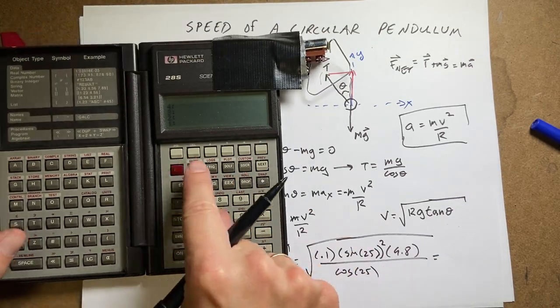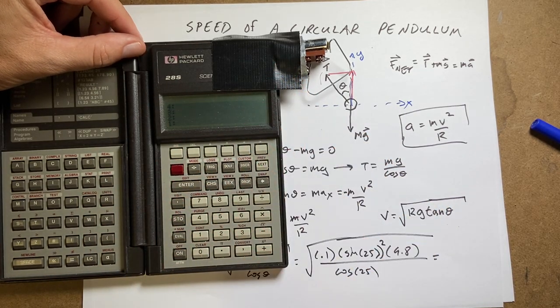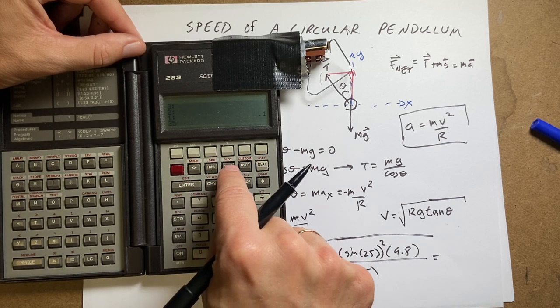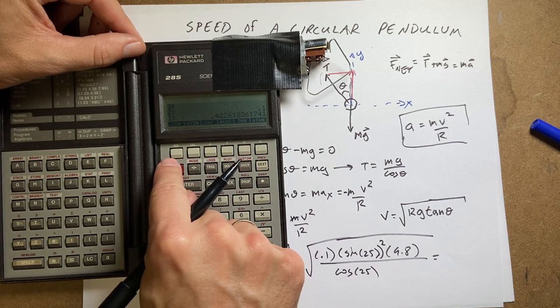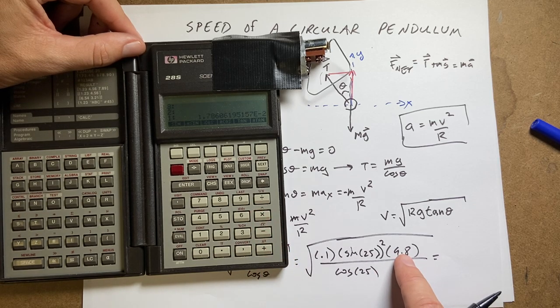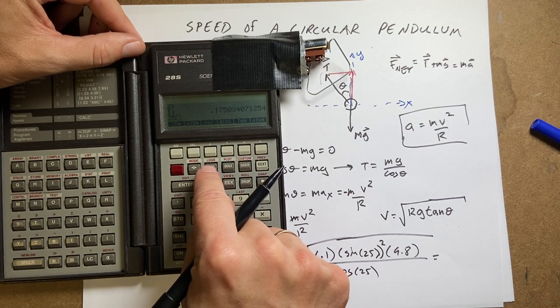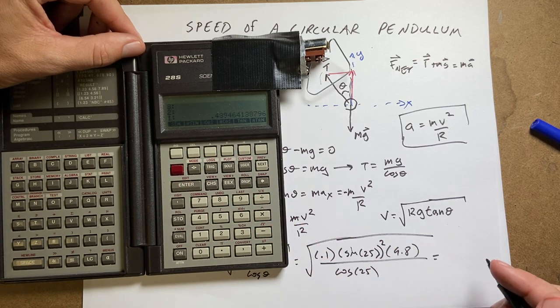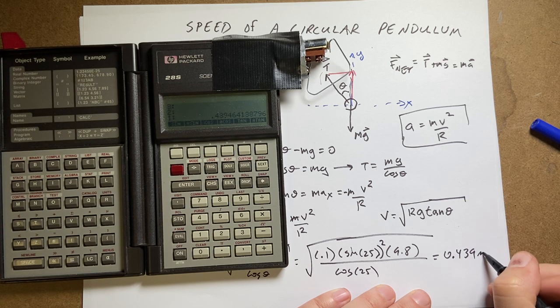Okay, so again, I'm using my RPN Hewlett Packard 28S. I know you're jealous with the custom battery pack. So I get 0.1, enter, 25 trig sine. Then I have to square that. Squared. And then I have to multiply by 0.1. And then I have to multiply by 9.8. And then I have to divide by 25 cosine, divided by. Now I take the square root.